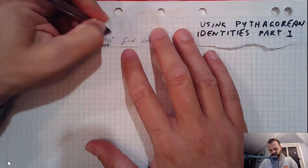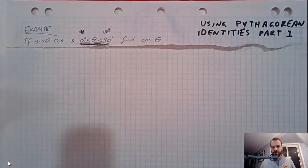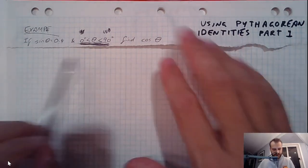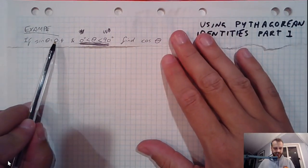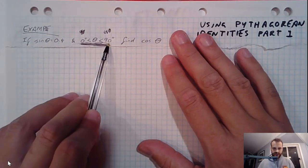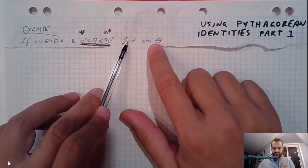All right, so now that we know what a Pythagorean identity is, we're just going to jump into solving some of these questions. All right, so if sine theta equals 0.4 and theta is between 0 and 90 degrees, find cos theta.